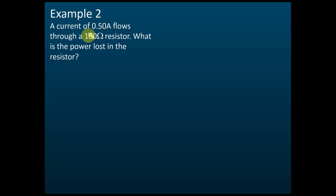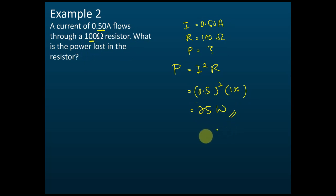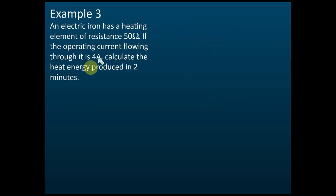Example two: a current of 0.5 ampere flows through a 100 ohm resistor — what is the power loss in the resistor? Since we have I and R, we use P = I²R. Substituting the values gives P = 25 watts.